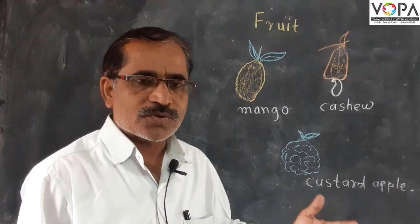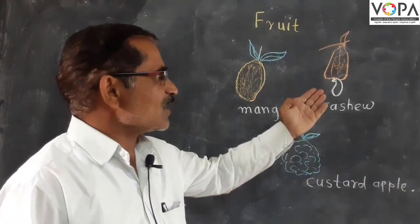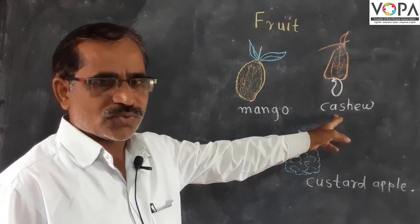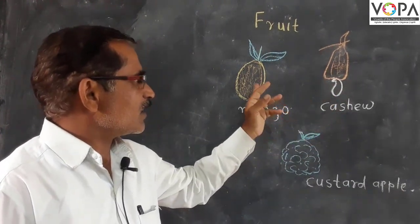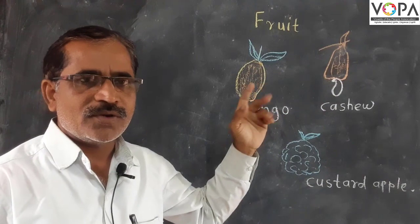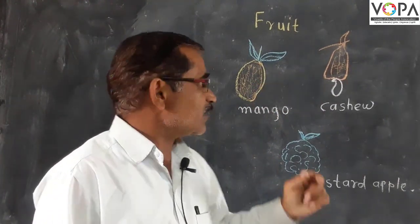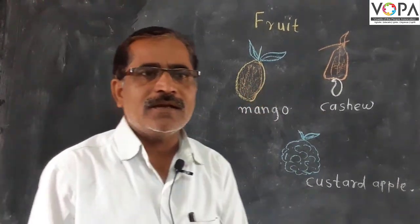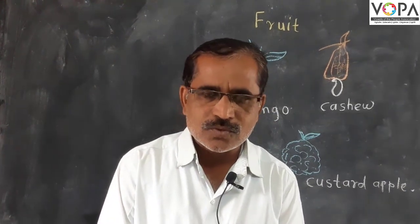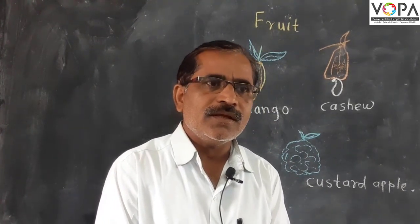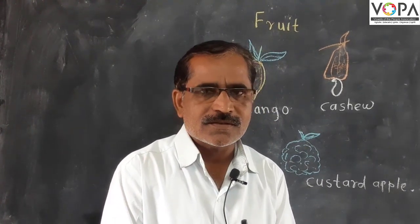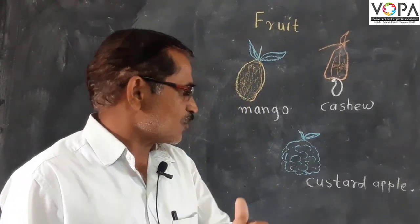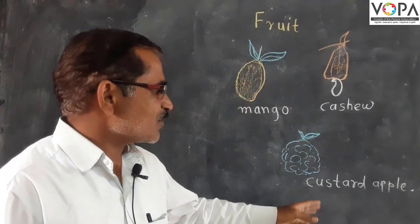In some fruits the seed is outside the fruit, like cashew. In some fruits there is only one seed — for example, mango. There are also some fruits that have many seeds inside them.